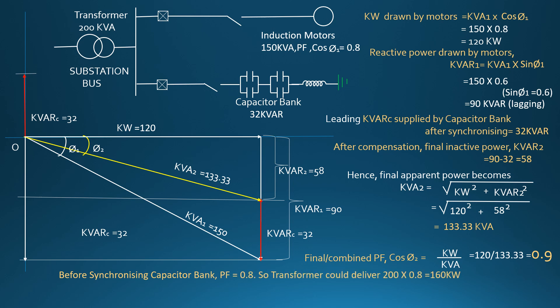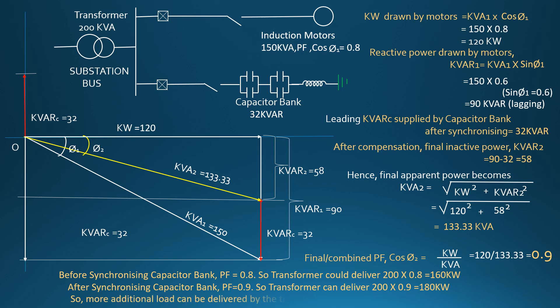Before connecting the capacitor bank, the power factor was 0.8 and the transformer could deliver 160 kW. But after connecting the capacitor bank, the power factor becomes 0.9 and the transformer can now deliver 180 kW. Therefore, the additional load that can be delivered by the transformer at 0.9 power factor equals 20 kW. So dear viewers, this was the explanation about power factor and the capacitor bank. Thank you.